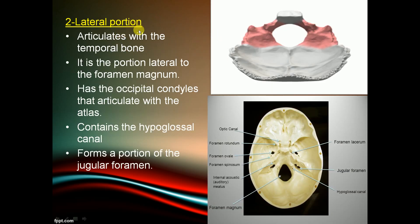The lateral part of the occipital bone articulates with the temporal bone. It is lateral to the foramen magnum, and the occipital condyles articulate with the atlas. It contains the hypoglossal canal and forms the major portion of the jugular foramen.